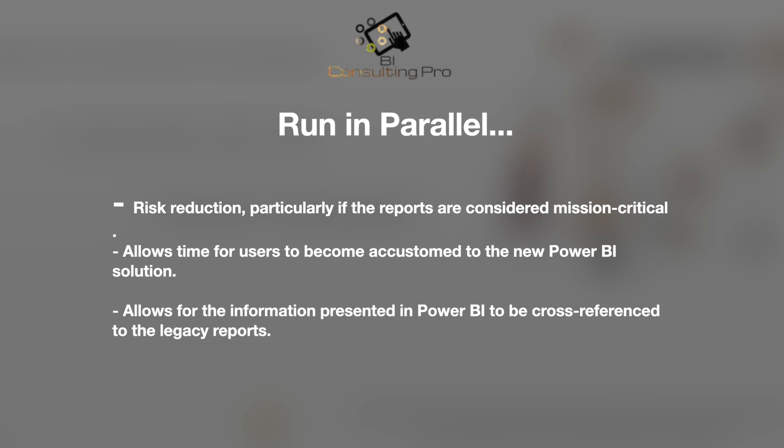In many situations, the new solution will run in parallel to the legacy solution for a predetermined time, because we are not going to decommission the legacy reporting system immediately after moving to Power BI. Advantages of running in parallel include risk reduction — particularly if reports are considered mission critical — allowing time for users to become familiar with the new Power BI solution, and allowing the information in Power BI to be cross-referenced against the legacy reports.